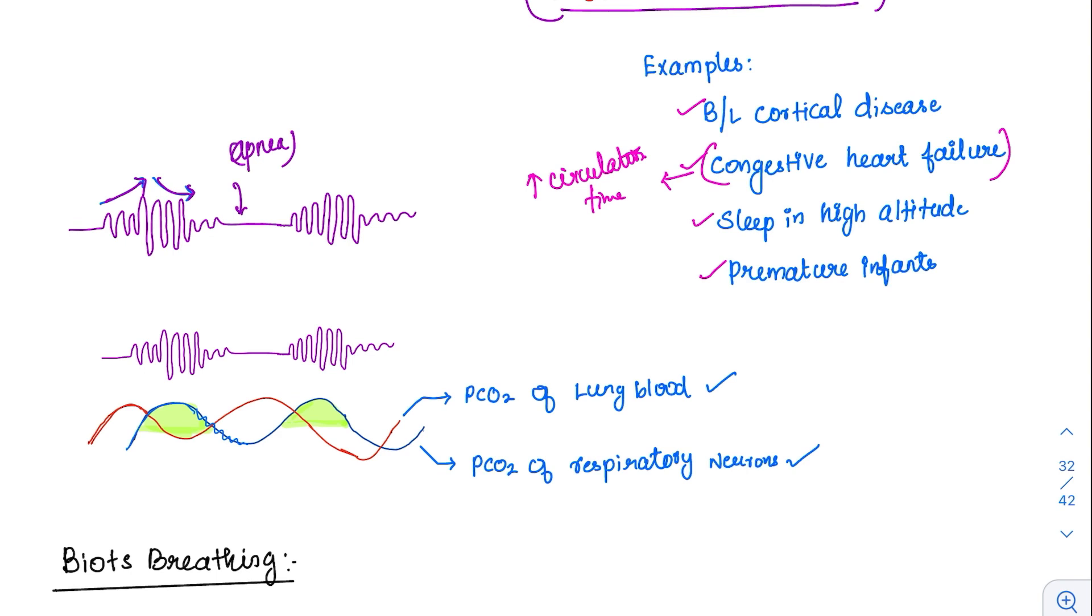First see the red curve. There has been accumulation of PCO2 in the lung. Ideally, they should reach the brain immediately, but that is not happening. They are reaching the point here, a little delayed—this blue curve.